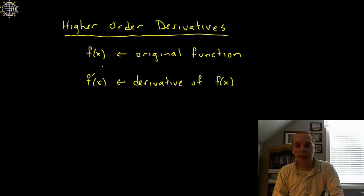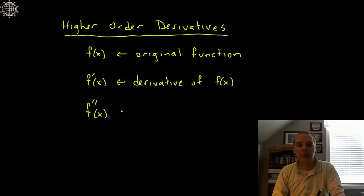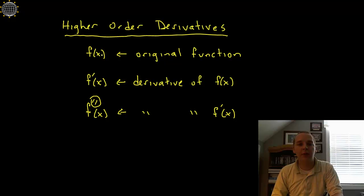So if we want to do that, it's totally fine. We would get f double prime — that notation means taking a derivative of the derivative. So f double prime is the derivative of f prime, which is like taking two derivatives of the original function.